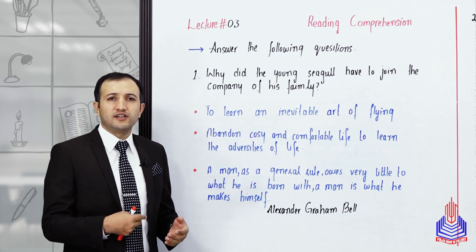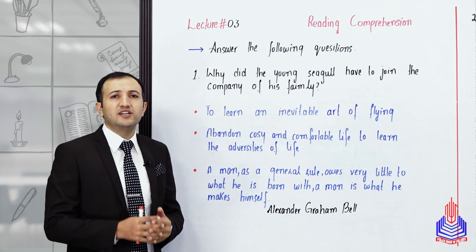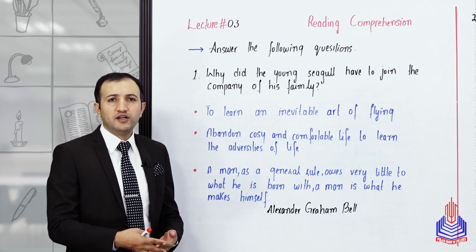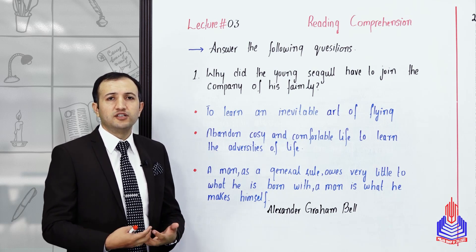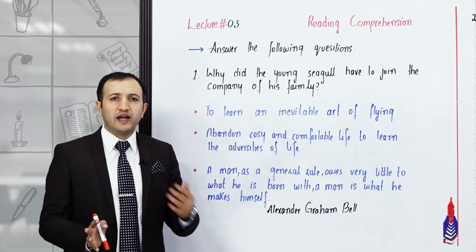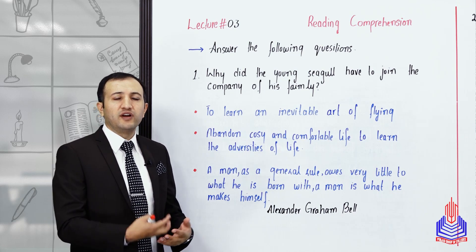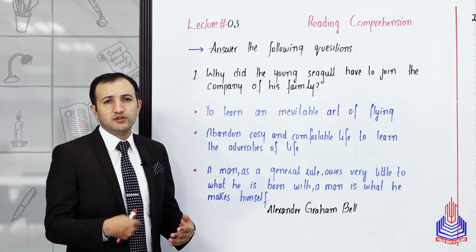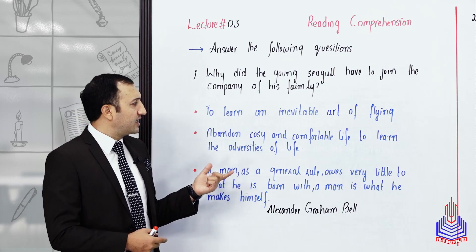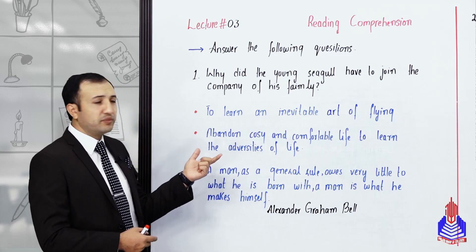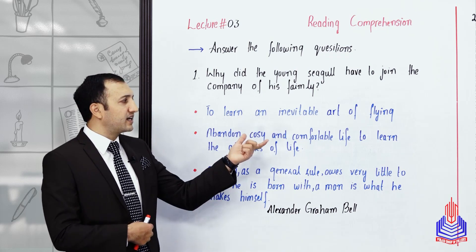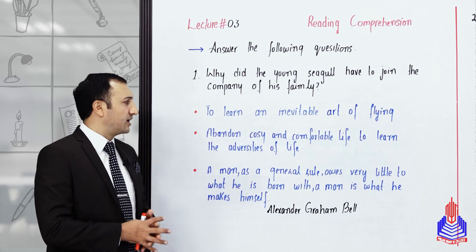First point: to learn the inevitable art of flying. Flying is inevitable, it is compulsory for the young seagull's survival. اگر وہ fly نہیں کرتا تو وہ survive نہیں کر پائے گا۔ His family left him and went away so that he would fly off the ledge and master the art of flying.